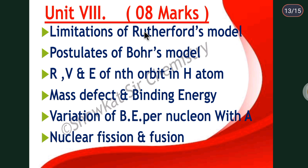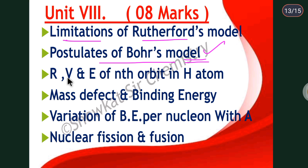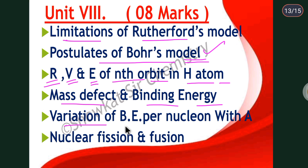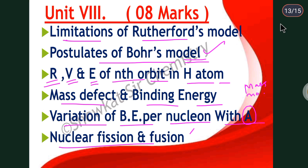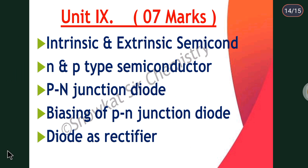Unit 8 covers atomic models: Rutherford's model, Bohr's model — remember the limitations of Rutherford's model and the postulates of Bohr's model. Using Bohr's model you should be able to calculate the radius, velocity, and energy of the nth orbit in a hydrogen atom. Then study mass defect and binding energy, the variation of binding energy per nucleon with mass number A, and nuclear fission and fusion reactions.